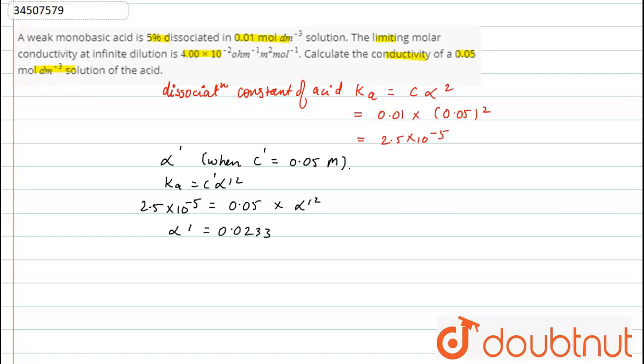As we know, alpha is equal to molar conductance at concentration C divided by molar conductance at infinite dilation. So, the molar conductance at C concentration will be equal to alpha dash multiplied by molar conductance at infinite dilation.